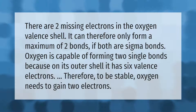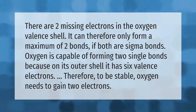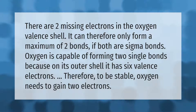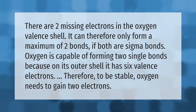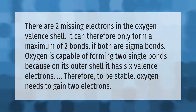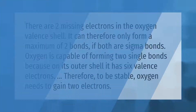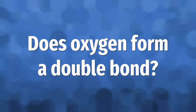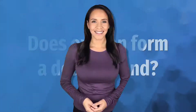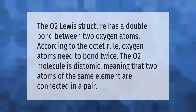There are two missing electrons in the oxygen valence shell; it can therefore only form a maximum of two bonds. If both are sigma bonds, oxygen is capable of forming two single bonds, because on its outer shell it has six valence electrons. Therefore, to be stable, oxygen needs to gain two electrons.